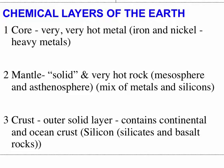The core is very, very hot metal — basically iron and nickel and a few other heavy metals. The mantle is primarily solid and very hot rock, made up of basically the mesosphere and asthenosphere, and it's a mix of metals and silicon products.